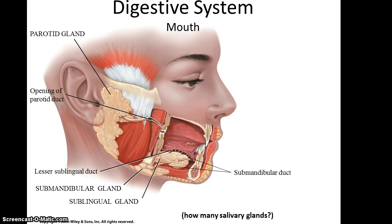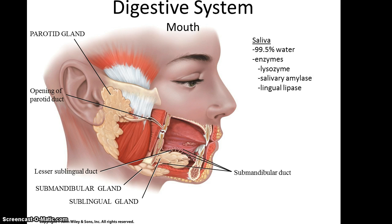The salivary glands come in pairs: two parotid glands on each side, two submandibular glands, and two sublingual glands — six total. Saliva produced by these glands is almost completely water; however, there's a small amount of enzymes. There's lysozyme, which acts as an antibiotic; salivary amylase, which begins digesting carbohydrates immediately; and lingual lipase, which is not yet active.